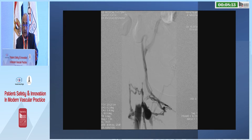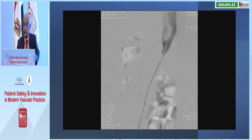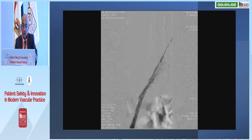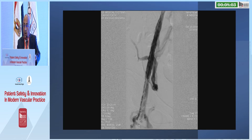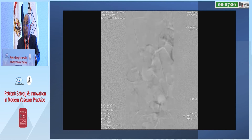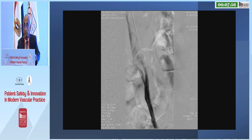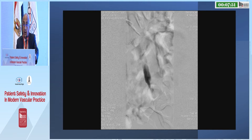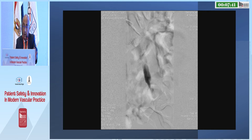This is an example of catheter-directed thrombolysis — a young lady who presented with thrombosis of the common iliac vein and external iliac vein. She was treated by catheter-directed thrombolysis, which revealed a proximal left common iliac vein near-occlusion: it was May-Turner syndrome. It was treated by balloon angioplasty, which was not adequate, and then she had a stent with excellent result. This procedure was performed in 2014, and this lady became pregnant twice since, and remains under follow-up with a patent stent and no symptoms whatsoever.